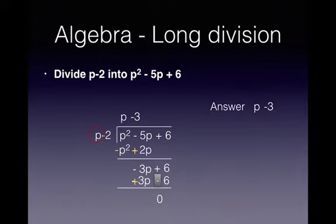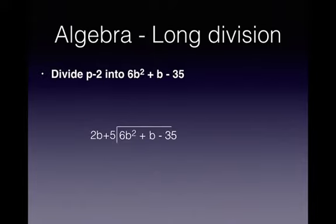It's the thing on top of the division bracket. Second one. Same steps. We divide the leftmost terms, multiply back and then we subtract by changing the sign on the bottom line and adding.